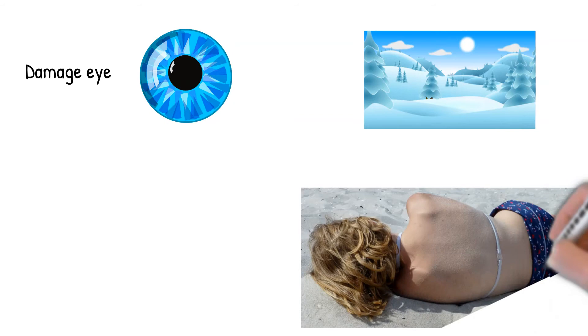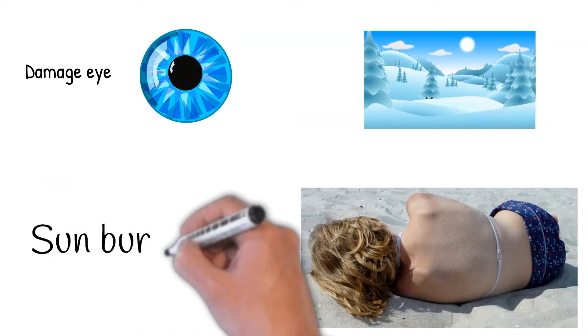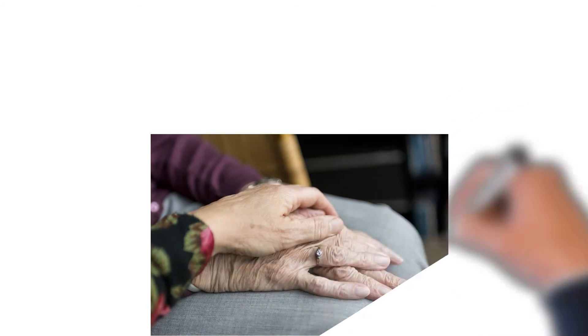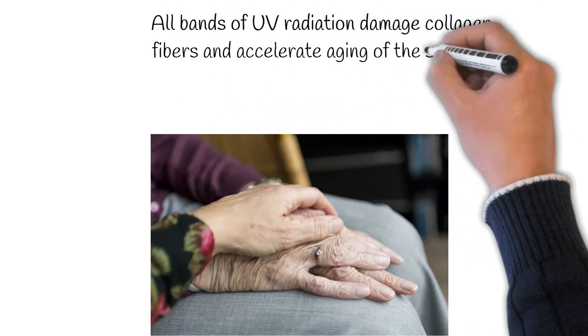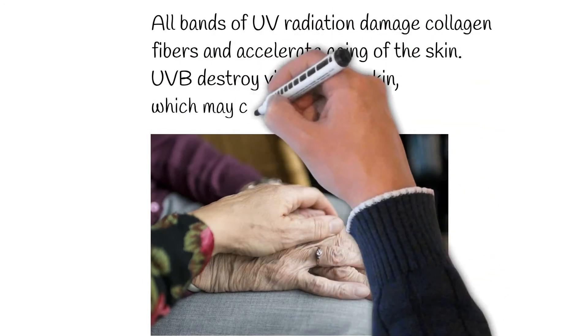Overexposure to ultraviolet radiation can cause sunburn, and also some forms of skin cancer. All bands of UV radiation damage collagen fibers and accelerate aging of the skin. UVB destroys vitamin A in skin, which may cause further damage.